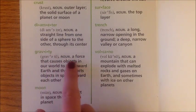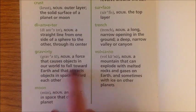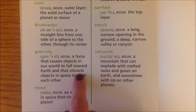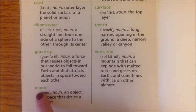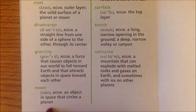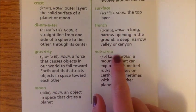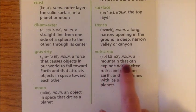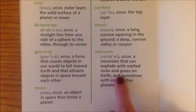Gravity: a force that causes objects in our world to fall toward Earth, and that attracts objects in space toward each other. Moon: an object in space that circles a planet. Volcano: a mountain that can explode with melted rocks and gases on Earth, and sometimes with ice on other planets.